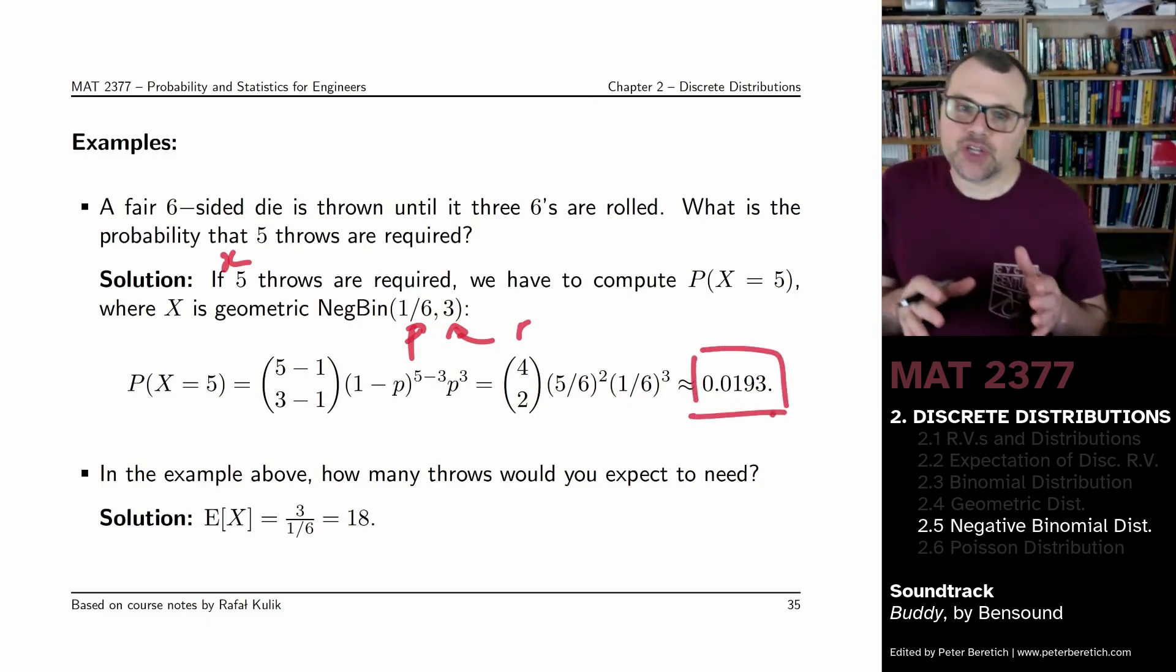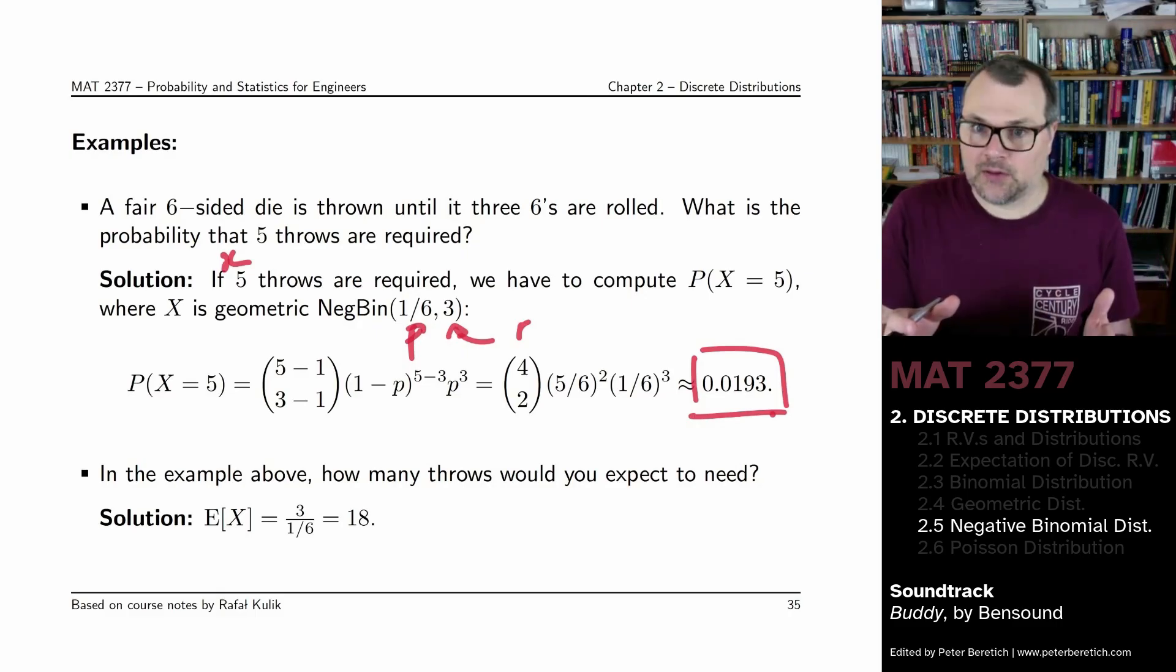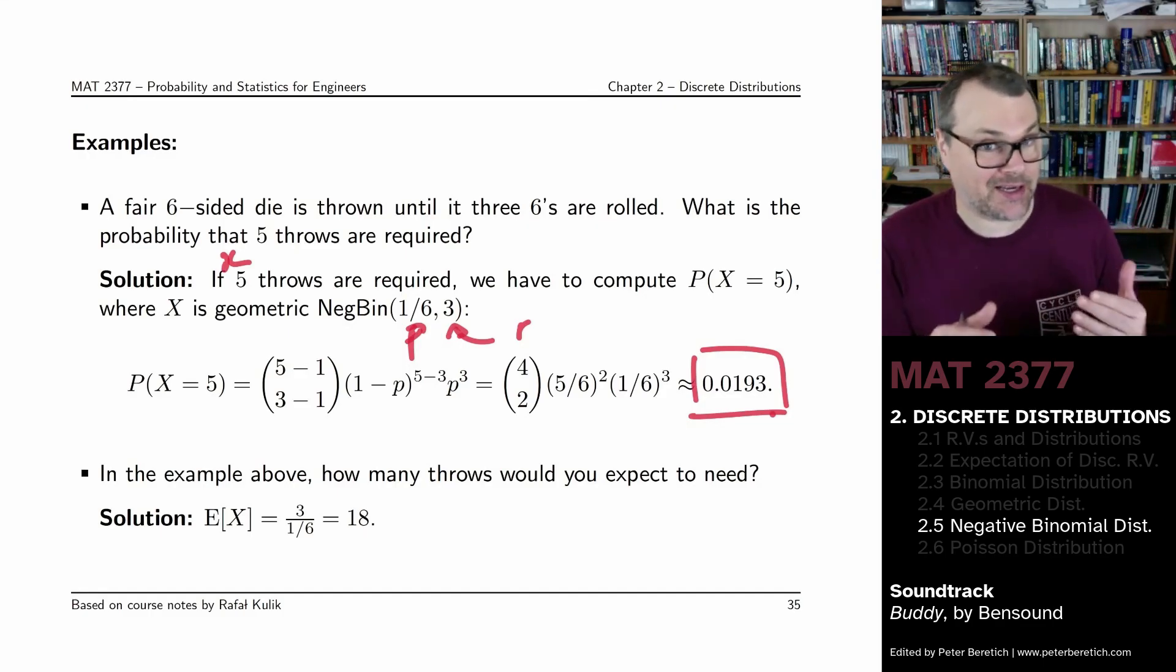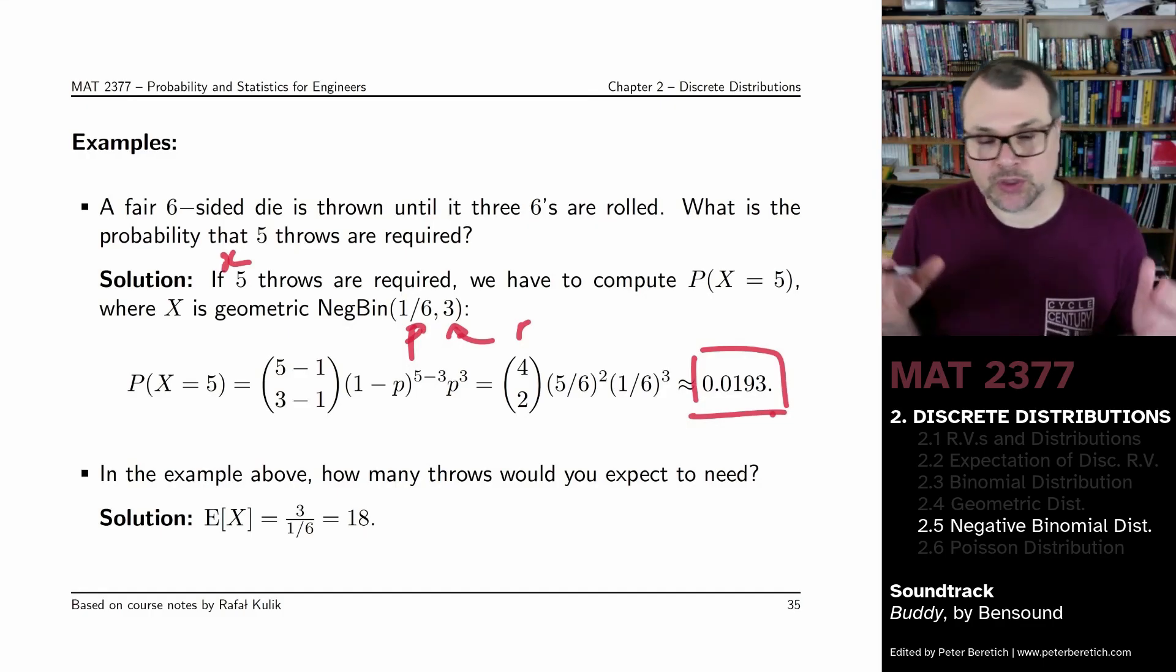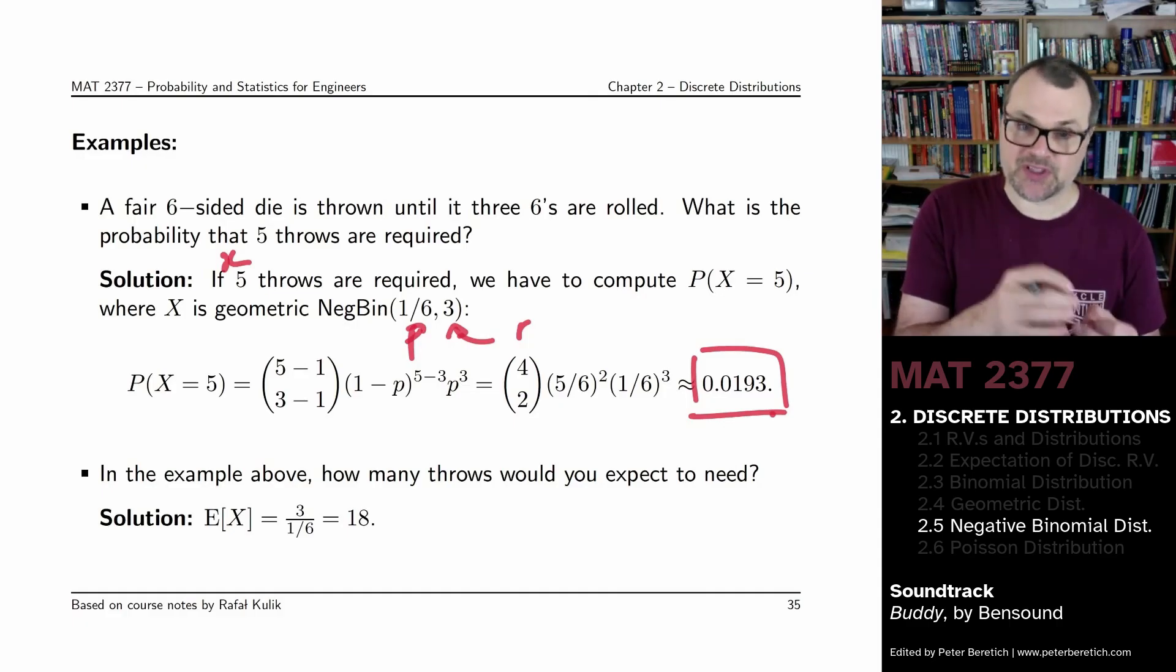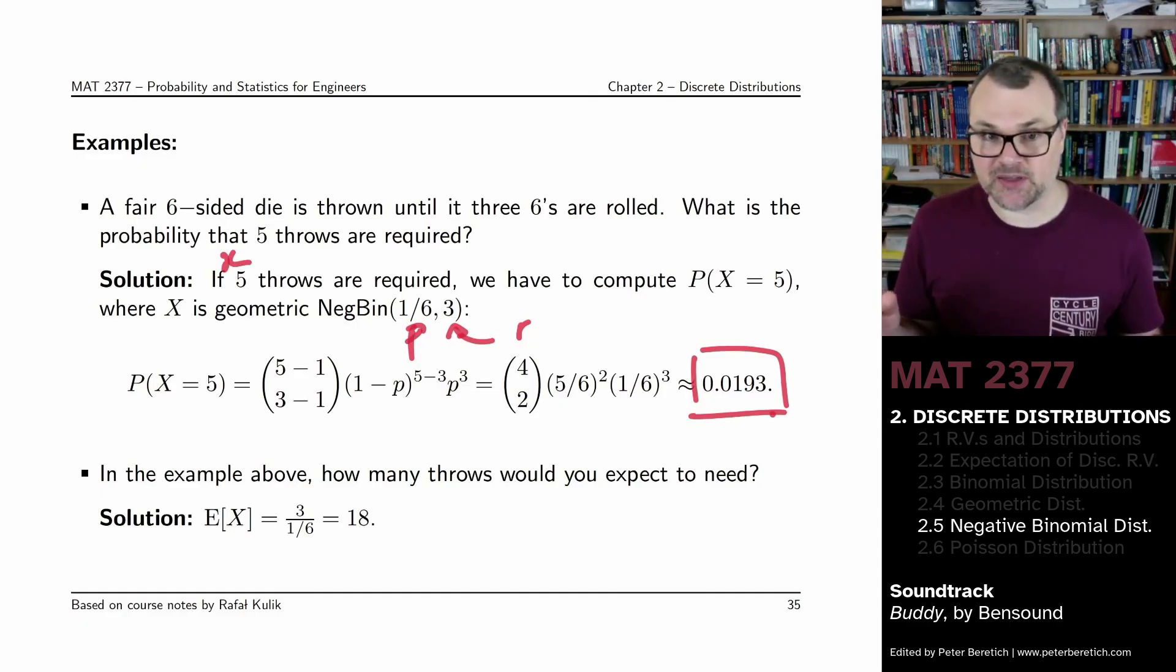That's the probability. The challenge here is to recognize what the distribution is. Because once you've recognized that this is a negative binomial distribution, the rest of the problem is easy. You just need to substitute specific values into the probability mass function.